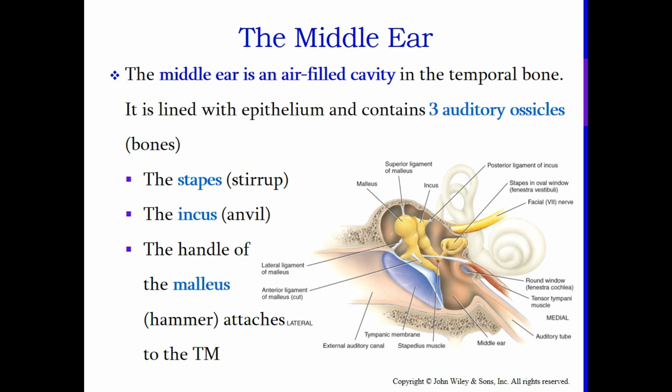From there we go to the middle ear, which is an air-filled cavity in the temporal bone lined with epithelium, containing three auditory ossicles — and 'ossicle' means bone. Those three bones are, by their anatomical names, the stapes, the incus, and the malleus. Their common names are: stapes is the stirrup, incus is the anvil, and malleus is the hammer.